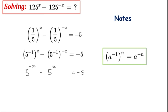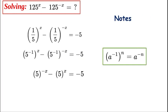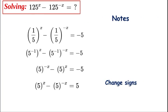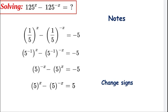We do one more step now — switch them back to front and change the signs just to tidy it up. So we get: 5^x minus 5^(−x) equals positive 5. We'll call this equation one.